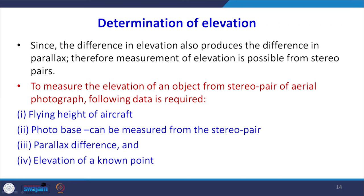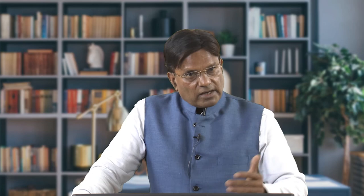Since difference in elevation produces difference in parallax, elevation measurement is possible by measuring the differential parallax bar readings. To measure elevation of objects from a stereo pair, what is required is: flying height of the aircraft, photo base measured from the stereo pair, parallax difference from parallax bar readings, and the elevation of one known control point. With all this data, the rest is simple computation.